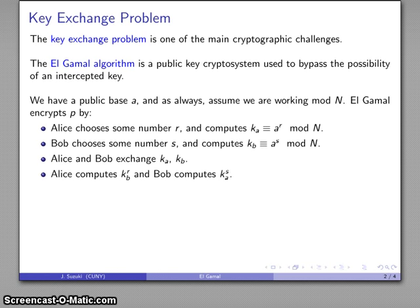Well, what do Alice and Bob do with these numbers? Well, Alice is going to compute Kb raised to power r. Now, note what that is. That's Bob's number raised to her exponent. Bob, on the other hand, is going to compute Ka raised to power s. That's Alice's number raised to his exponent.